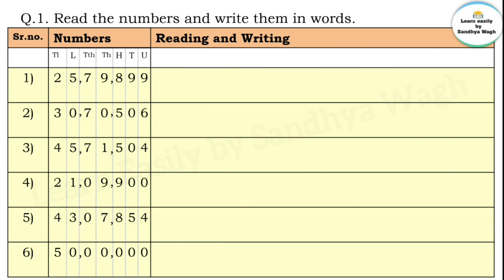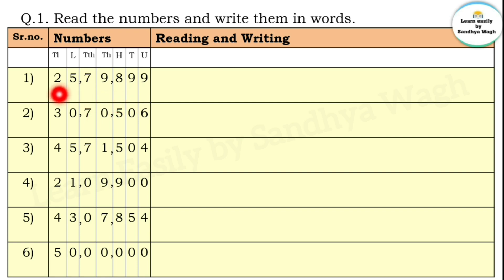Now let's solve Problem Set 4. Question one: read the numbers and write them in words. When you read or write a number, write it according to its place values. Commas must be placed according to periods: units place, tens place, hundreds place, thousands place, ten-thousands place, lakhs place, and ten-lakhs place.